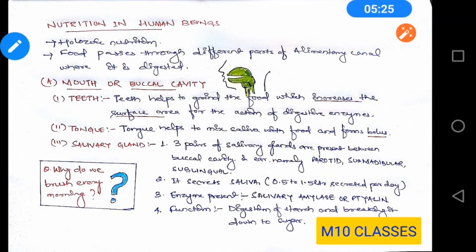The process of ingestion starts from your mouth, that is your buccal cavity. What happens in the buccal cavity? The first part is teeth. Teeth are used to chew the food — this chewing grinds the food into smaller particles, which increases the surface area for the action of digestive enzymes. Consider a large log of wood: if you cut it into smaller pieces and burn it, it burns rapidly. Likewise, when food is ground into smaller particles, the digestive enzymes also work faster.